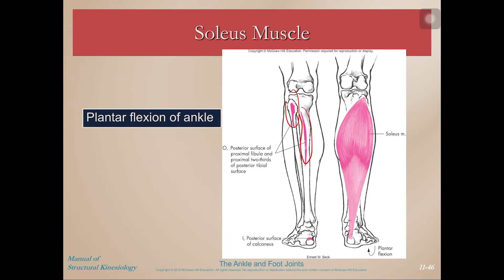The soleus muscle is deep to the gastrocnemius and is more type one fiber dominant, while the gastrocnemius tends to be more fast twitch. Unsurprisingly, sprinting will make you sore in your gastrocnemius the next day, whereas a lot of walking will make you sore in your soleus. The soleus's only action is plantar flexion.